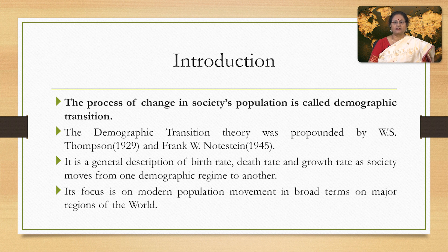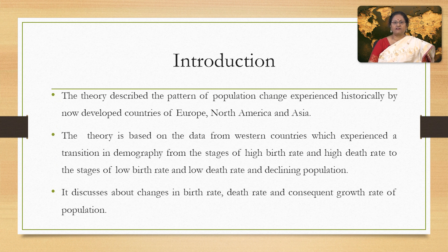It is a general description of birth rate, death rate and growth rate as society moves from one demographic regime to another. Its focus is on modern population movement in broad terms on major regions of the world. The theory describes the pattern of population change experienced historically by now developed countries of Europe, North America and Asia. It is based on data from western countries which experienced a transition from high birth rate and high death rate to low birth rate and low death rate and declining population.